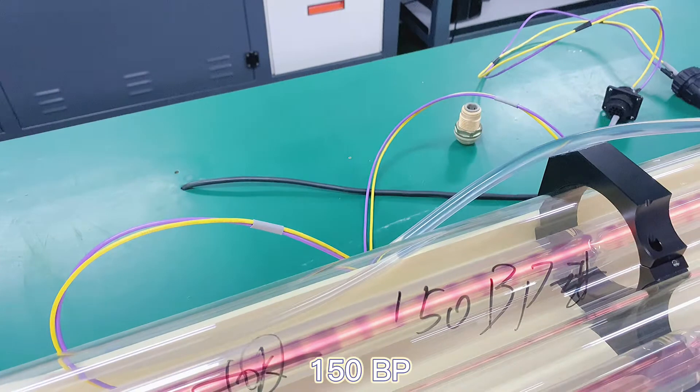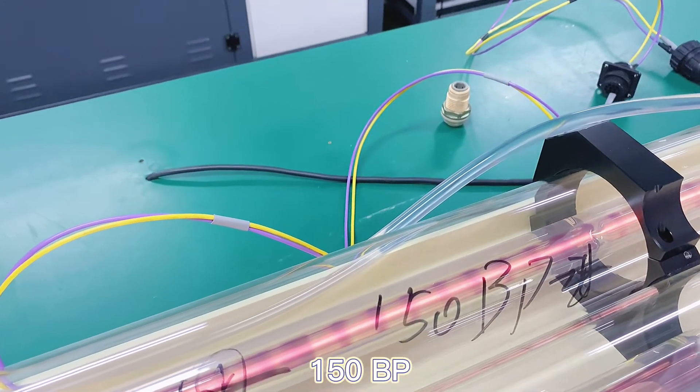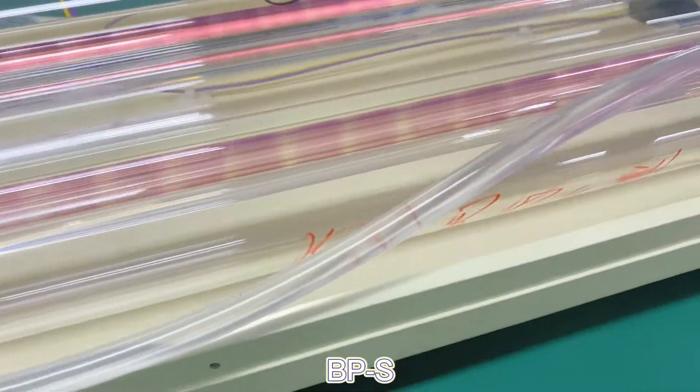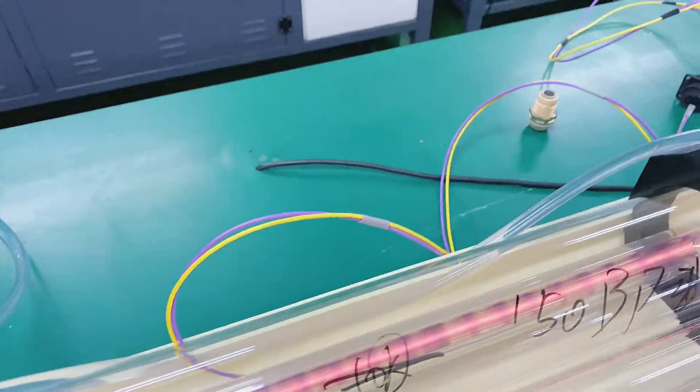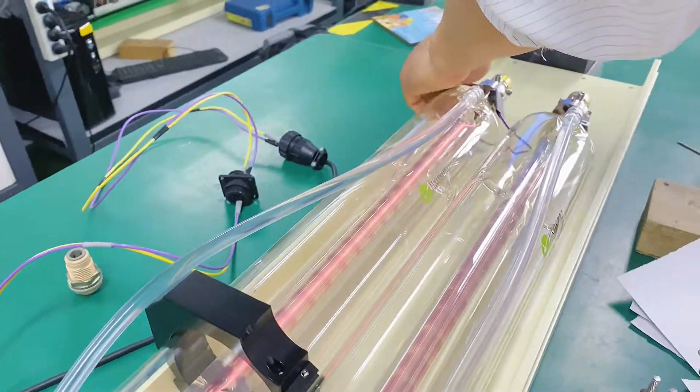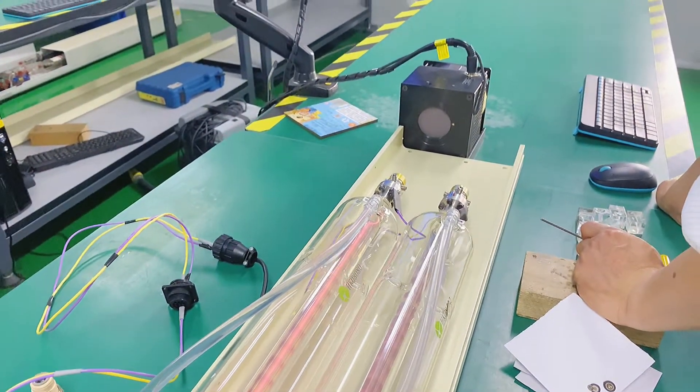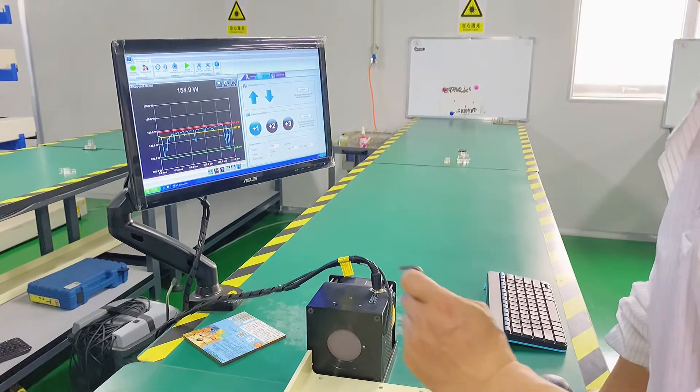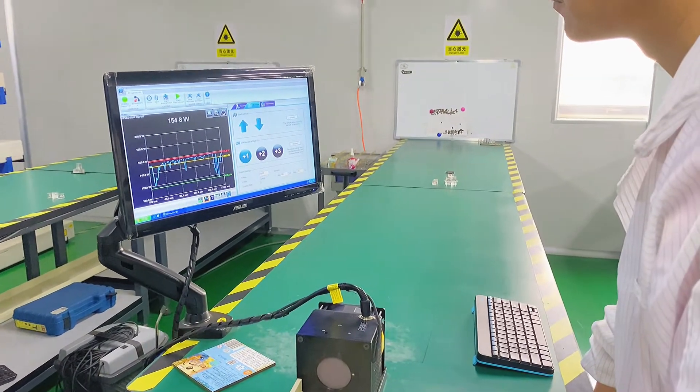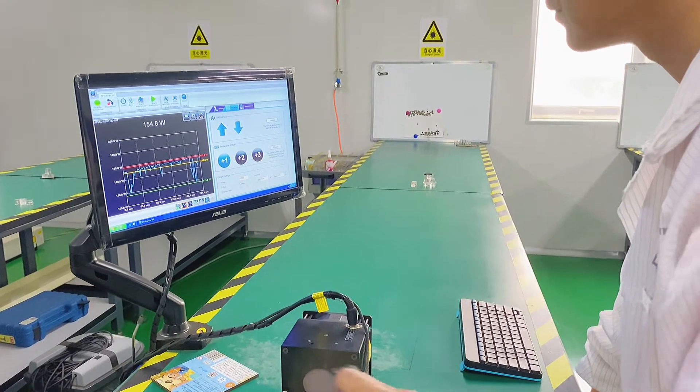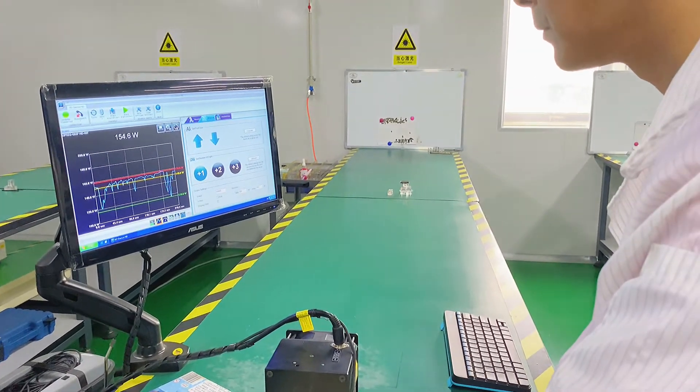This one is 150 BP. This one is BPS. So this one is the A-tube, this one is the B-tube. A-tube, B-tube. The power test to achieve the perfect power.